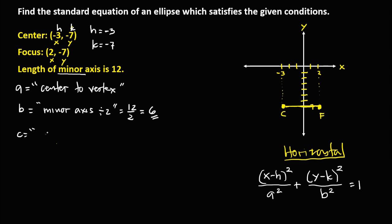To solve for c, c is the distance from center to focus. We find this distance from the graph using the counting method. Starting from the center and counting to the focus, we get 1, 2, 3, 4, 5. So therefore, c is equal to 5.